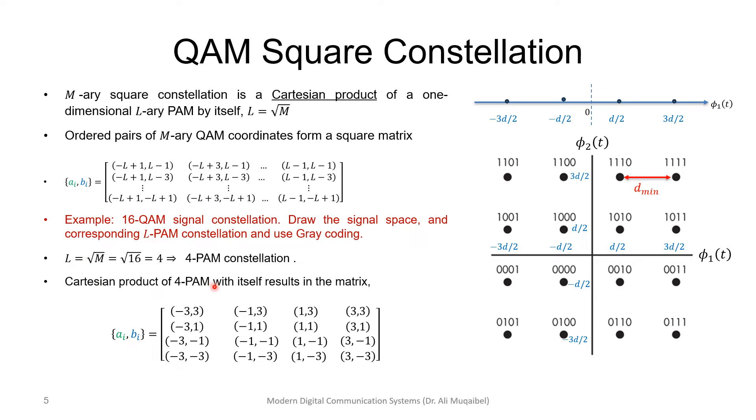The Cartesian product of the 4-PAM: we take the same square but substitute for L. We substitute 4, so you get -4 plus 1, which is -3, and so on. This slide shows an example where we can think of QAM as an extension of PAM.